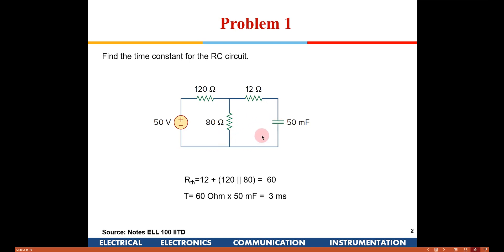In this circuit, if you see what is the circuit towards the left of the capacitor — which consists of a 50 volt voltage source, 120, 80 and 12 ohm resistors — we can replace this with a Thevenin equivalent circuit. The Thevenin equivalent circuit will be only a voltage source and a resistance in series. If you replace it with a Thevenin circuit, it will just be a voltage source, a resistance, and a capacitance in series, and the time constant will be just RC.